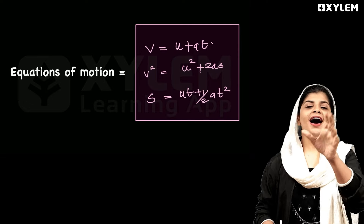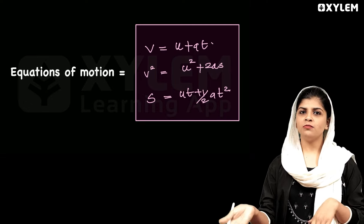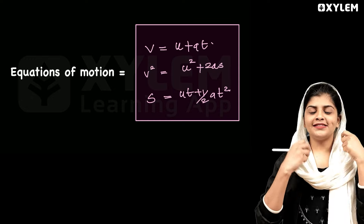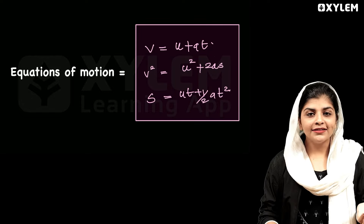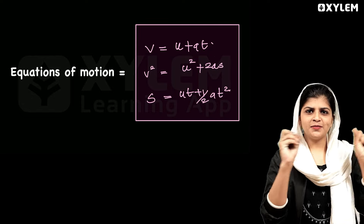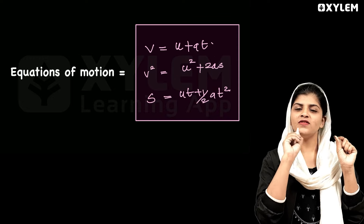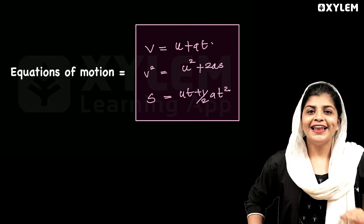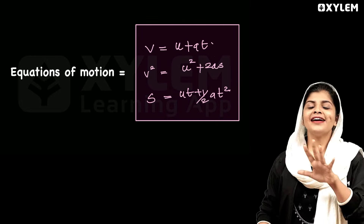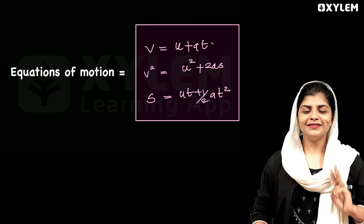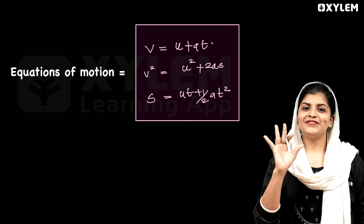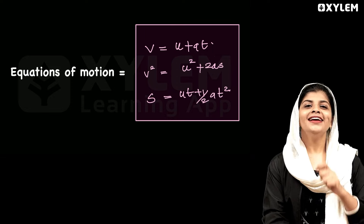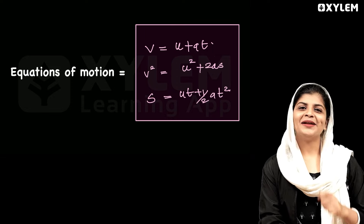Please make sure you know the variables — v, u, a, s, t — and understand how to identify them from the question. You will be able to learn the physics in life. These are the 3 equations that are important. Please comment and like. Bye.